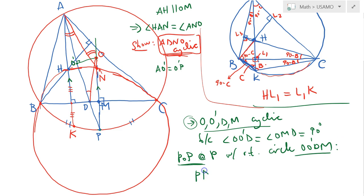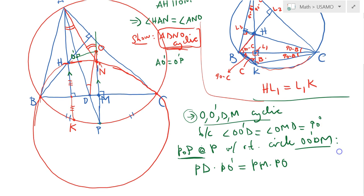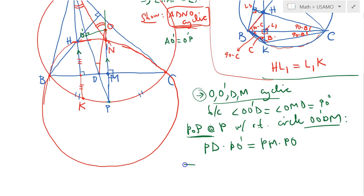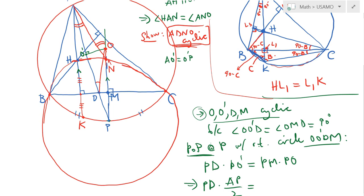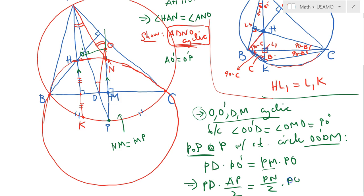The power of point P with respect to circle OO'DM equals PD times PO' equals PM times PO. Now, since O' is the midpoint of AP, I can replace PO' with AP/2. Similarly, since the circumcircle of BHC is a reflection of the circumcircle of ABC across side BC, point P and point N are reflections of each other across BC, so NM equals MP, meaning PM equals PN/2.